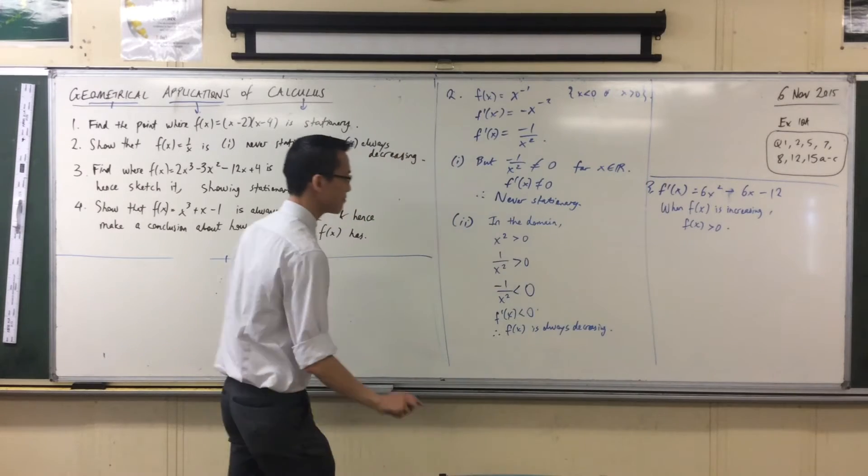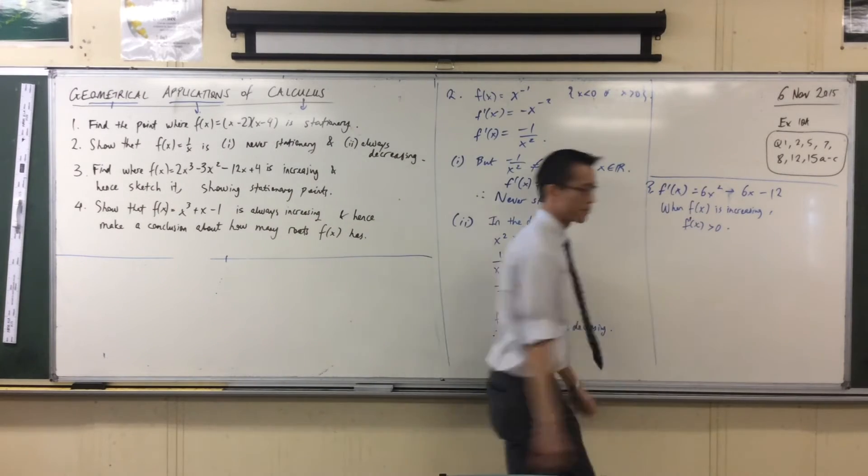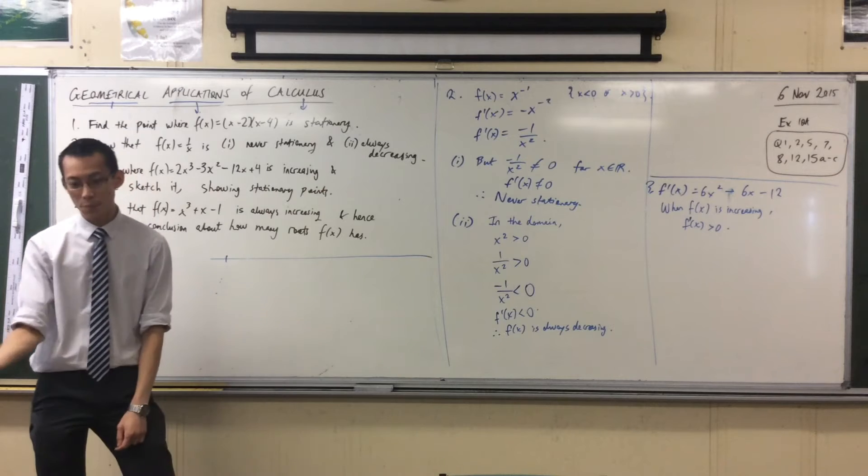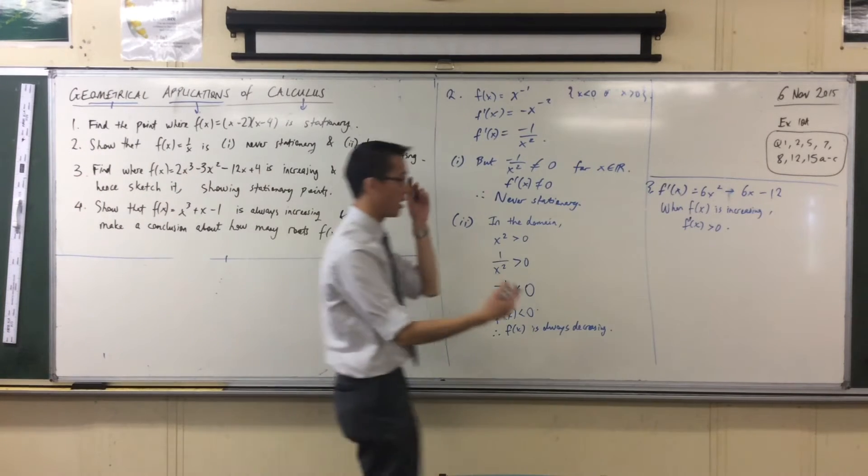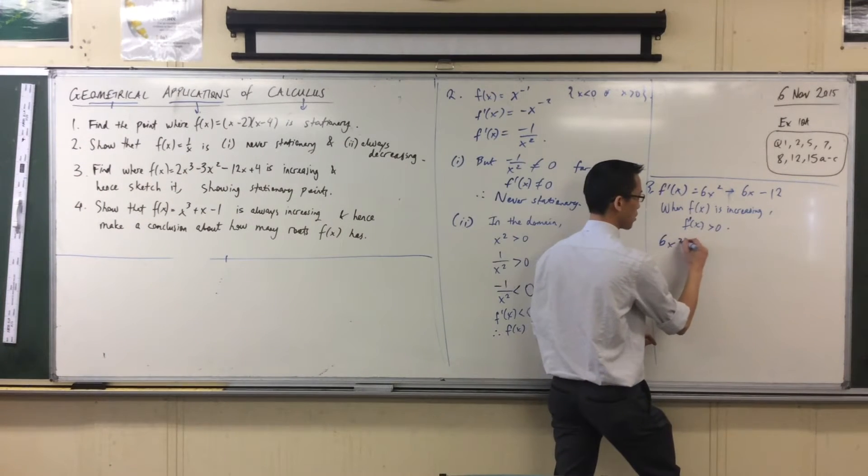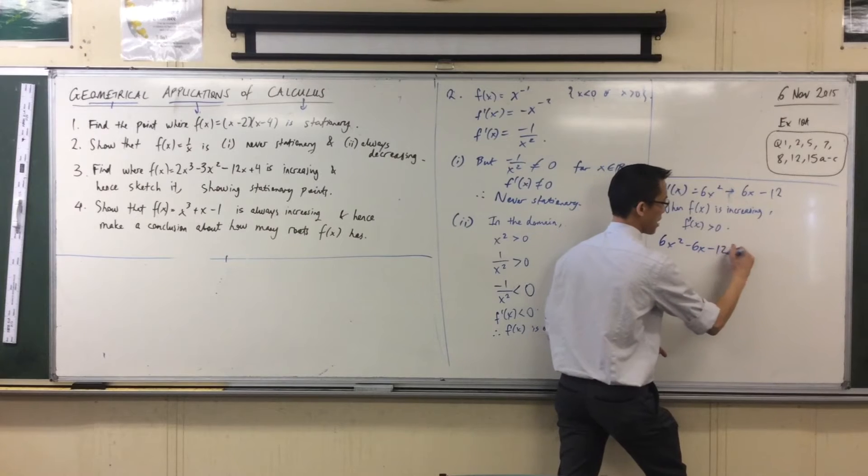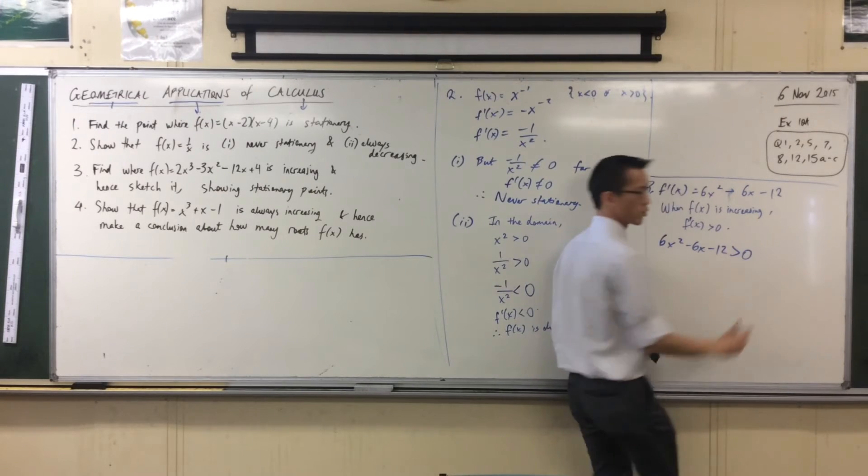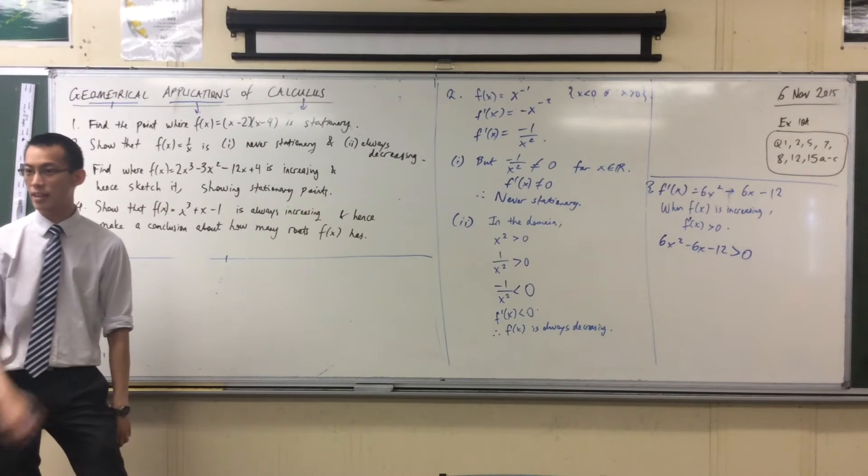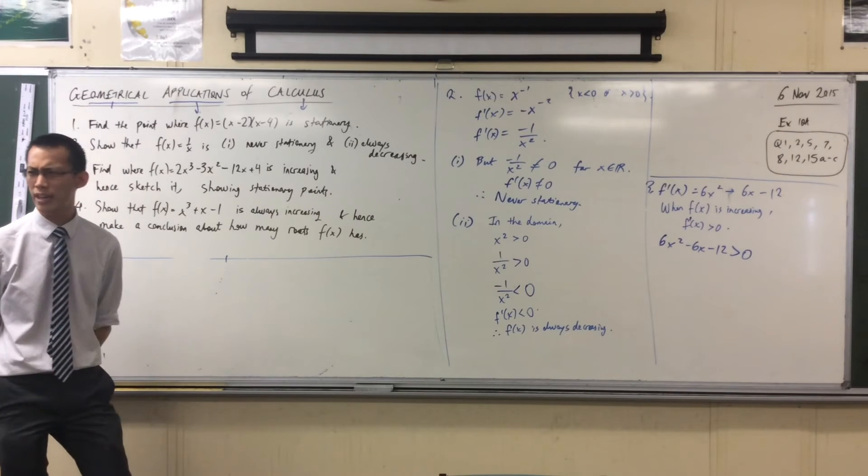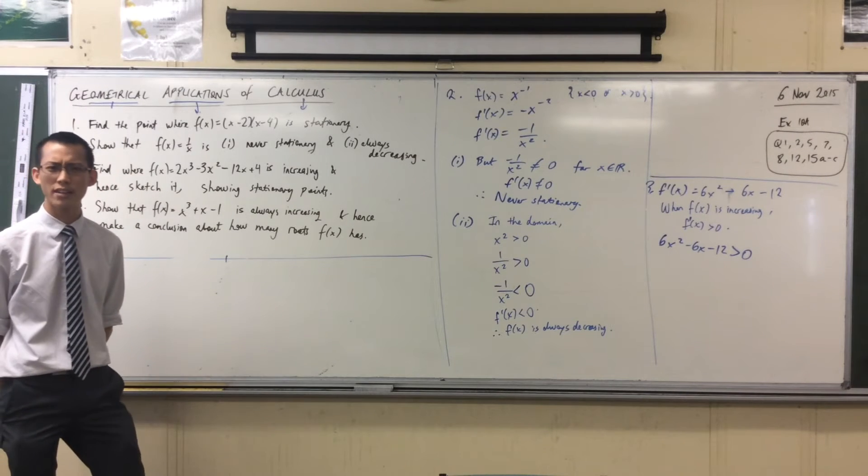Thank you. I've computed my derivative, so I'm going to substitute it in now. So I've got 6X² - 6X - 12, it's increasing, so it's greater than zero. I have a quadratic inequality.